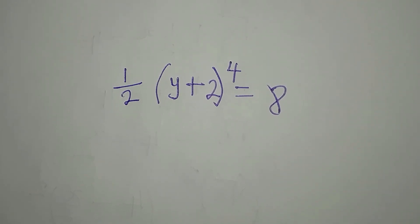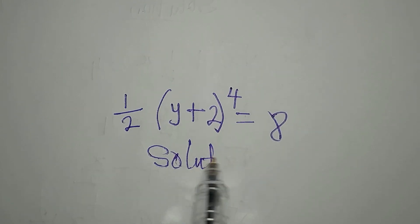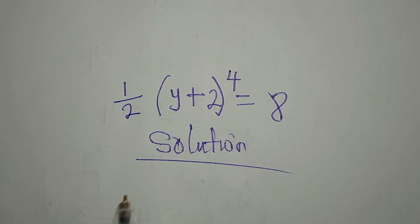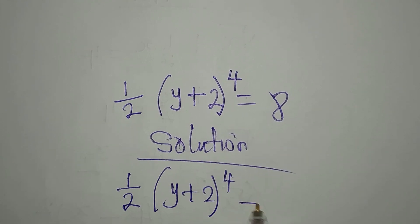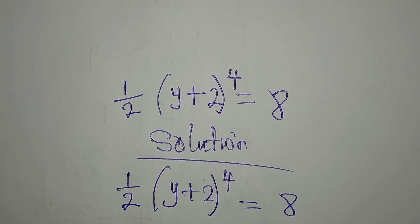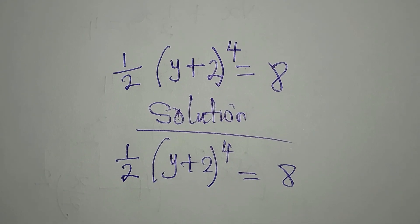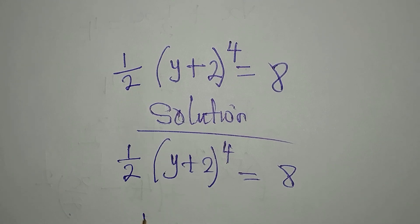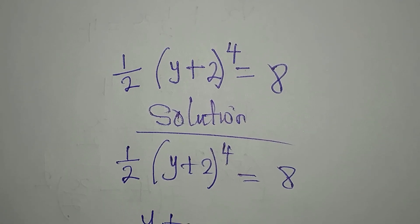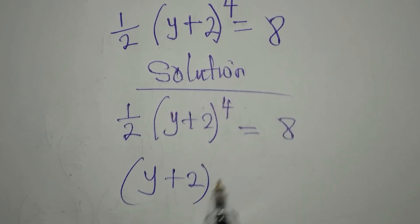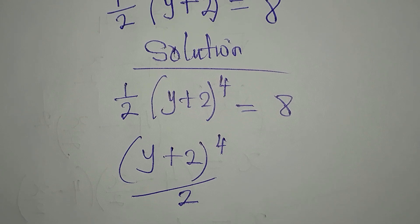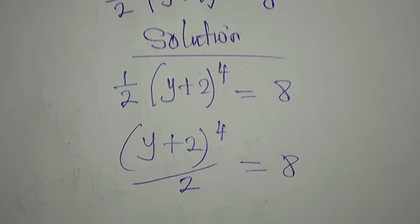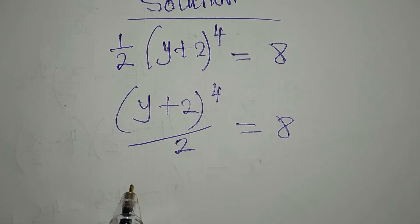Hello everyone. Let's provide the solution to this problem: half of (y+2) to the power of 4 equals 8. What will be the first step? Remember, these two forms are the same. Let me rewrite it as (y+2) to the power of 4 all over 2, equals 8. Since these are the same, I can cross multiply.